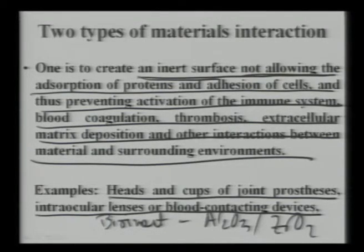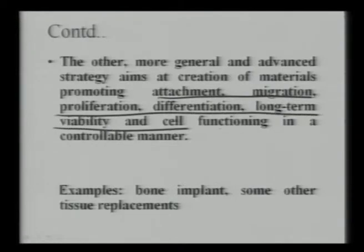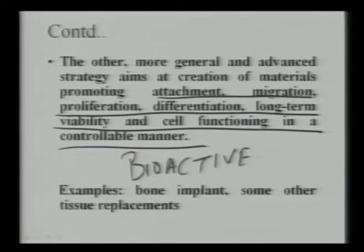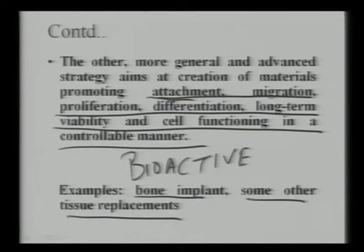The second, more advanced strategy aims to create materials that promote cell attachment, migration, proliferation, differentiation, long-term viability, and self-functioning in a controllable manner — these are called bio-active materials. Bio-active materials belong to families like hydroxyapatite or calcium phosphate, used in bone implant or tissue replacement applications. In vivo, these materials create surfaces that promote cell attachment, migration, and proliferation.